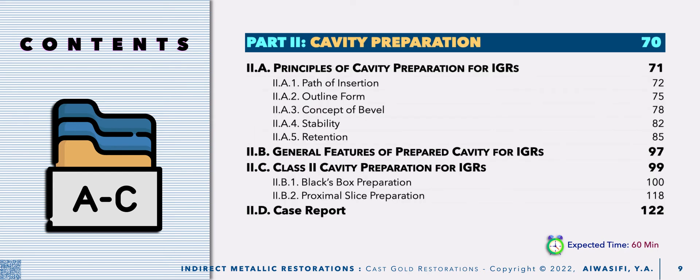Part 2 includes cavity preparation. We already discussed the principles of cavity preparation of indirect metallic, especially indirect gold restorations, including developing path of insertion, and what are the differences in outline form between direct and indirect metallic restorations, what is the concept of bevel, why we should provide stability and how to gain retention, especially axial retention. We concluded this in the form of general features of prepared cavity.